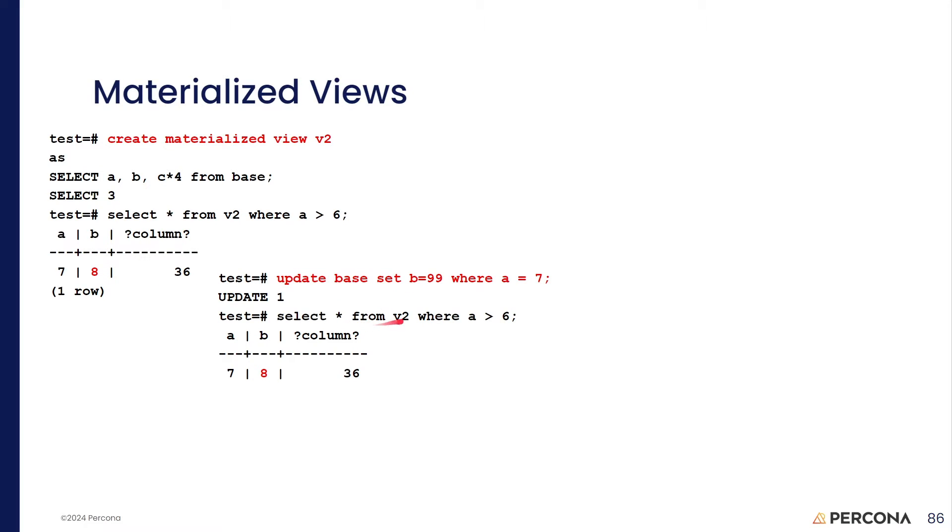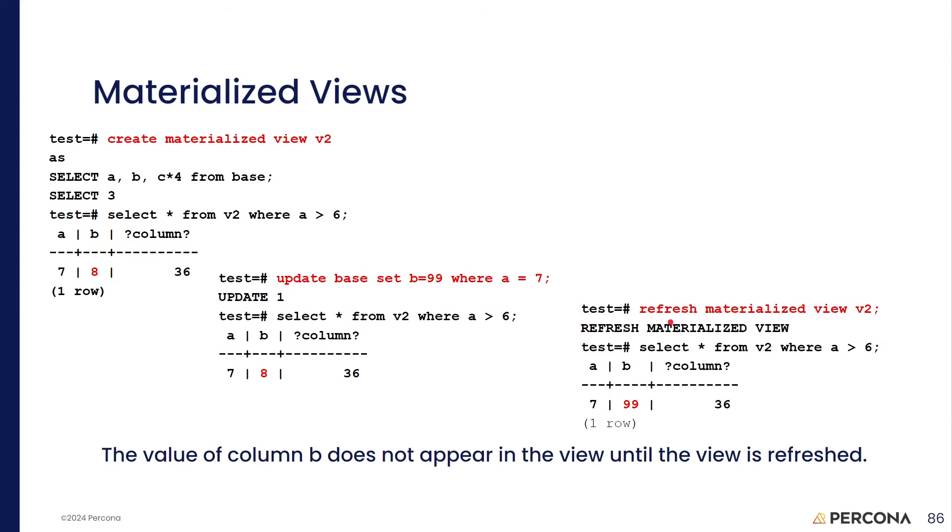So, if we do a select from V2, where A is greater than 6, we got the 7, and the 8, and 36. V2 hasn't tracked with what's updated here. Well, that's by purpose. It's a materialized view. Until we say refresh materialized view on view V2, B has the old value of 8, not the new value of 99.